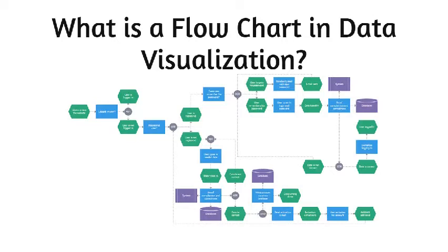This type of diagram is used to show the sequential steps of a process. Flowcharts map out a process using a series of connected symbols, which makes the process easy to understand and aids in its communication to other people. Flowcharts are useful for explaining how a complex and/or abstract procedure, system, concept, or algorithm works. Drawing a flowchart can also help in planning and developing a process or improving an existing one.